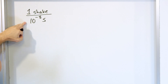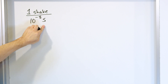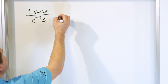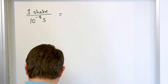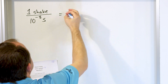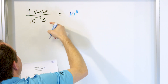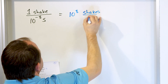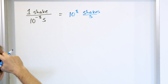One shake is equal to 10 to the minus 8 seconds. This is a unit conversion equality of two different units, so we can put them in ratio and divide them, but nothing cancels. When you take one and divide it by 10 to the minus 8, you get 10 to the positive 8, and the unit is shakes per second. So that's 10 to the 8 shakes per second.